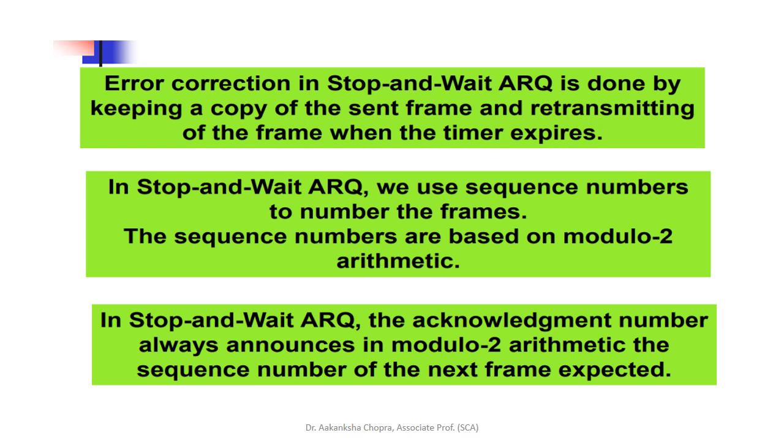We also have error correction in stop-and-wait, which is known as ARQ. For example, if a data frame is lost or has a negative acknowledgement, automatically the sender will be sending the packet again. That is why it is known as ARQ, automatic repeat request.